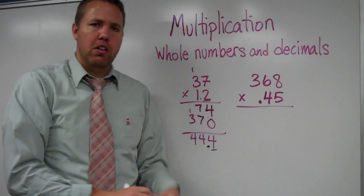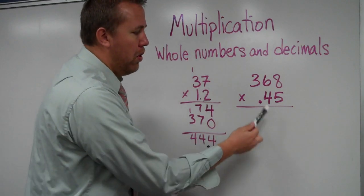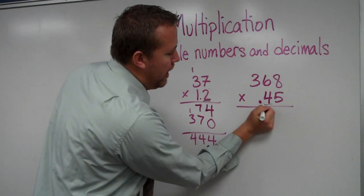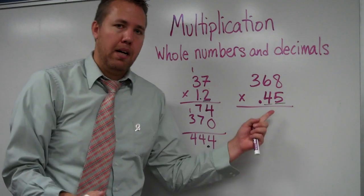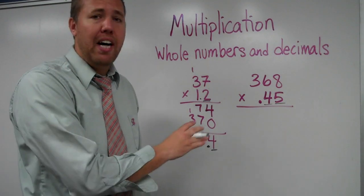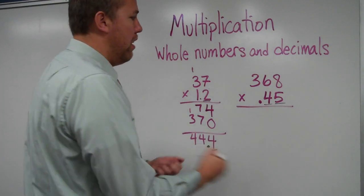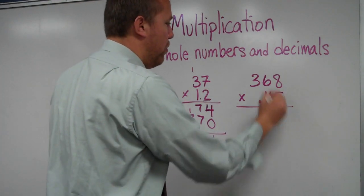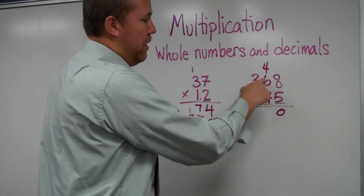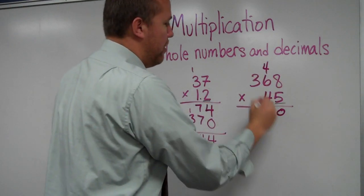Let's look at that again. You can already see that there are one, two digits behind the decimal in the problem. So be thinking how many digits are going to be behind the decimal in the answer. As I go through this, it's just the regular algorithm. Five times eight is 40. Here's the four. Five times six is 30, plus four is 34.